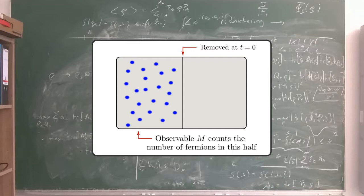The next step was to look at some examples. One of these involved n fermions trapped in one half of a box. At time zero, a partition is removed and the gas is allowed to expand.